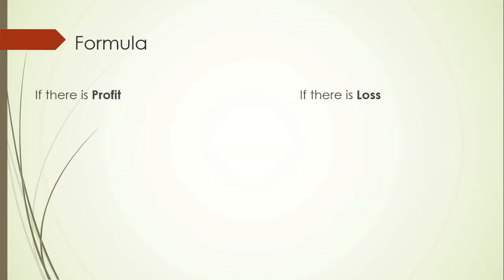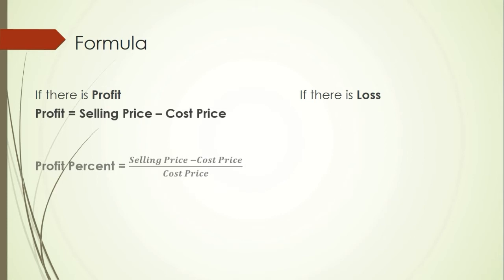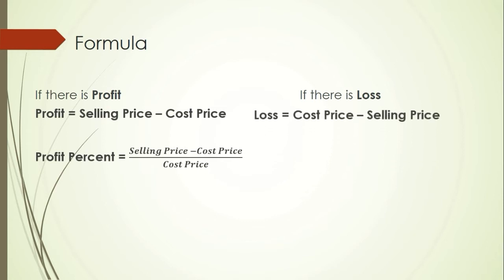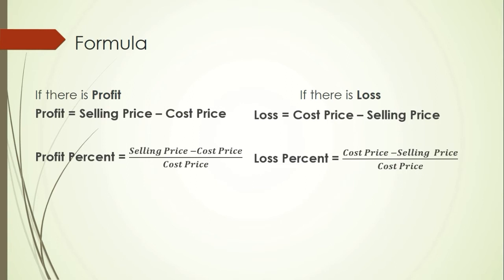Here are the formulas for profit and loss. Profit is equals to selling price minus cost price. For profit rate or percentage, we use the profit percent formula: selling price minus cost price, divided by cost price. For loss: loss is equals to cost price minus selling price. And loss percent is equals to cost price minus selling price, divided by cost price.